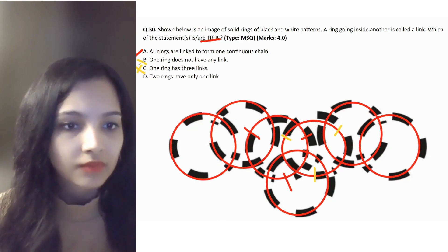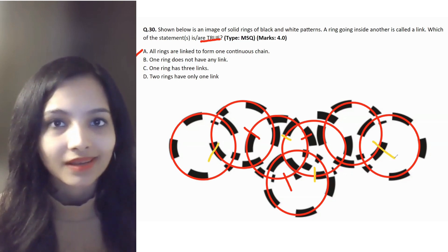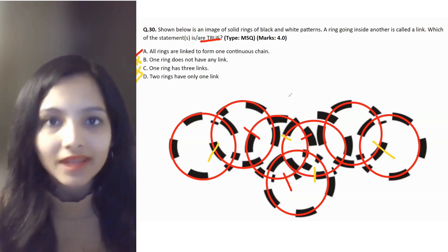Statement D: two rings have only one link. Yes, that's true. The ends of the chain. So options A and D are true. They are the answers, and that's what you have to select.